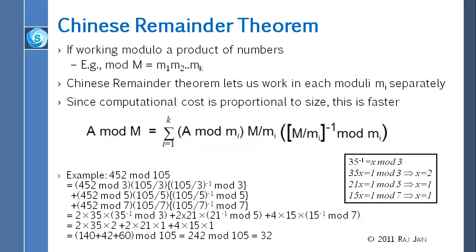For 15 inverse mod 7, you will find that x is equal to 1. So we found the inverses and we put those values in and multiply. So this term is 2 times 35 times 2, this one is 2 times 21 times 1, and this is 4 times 15 times 1. You multiply the whole thing: 140 plus 42 plus 60, which is 242. Then 242 mod 105 is 32.